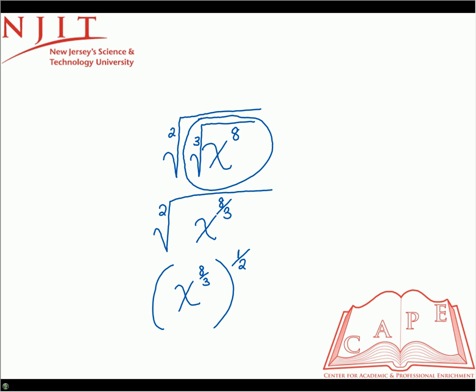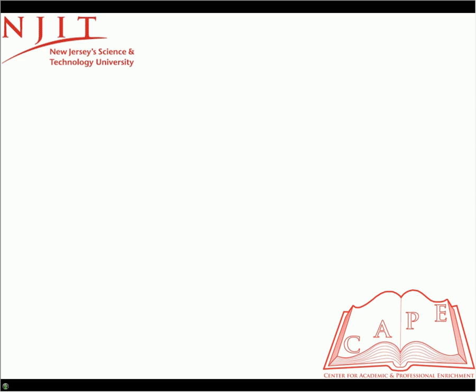So now we have an exponent raised to an exponent, so we multiply the exponents together. So it would be 8 over 3 times 1 over 2, which is just 8 over 6. So this is x to the 8 over 6, and then the 8 over 6 can simplify to x to the 4 over 3.